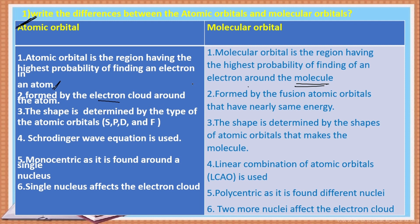For example, consider atom A — the electrons are revolving around the nucleus, which creates an electron cloud. Here, an atom means an individual entity. The electrons revolving around the nucleus of atom A create an electron cloud, and therefore it forms an atomic orbital. So atomic orbitals are formed by the electron cloud around the atom.